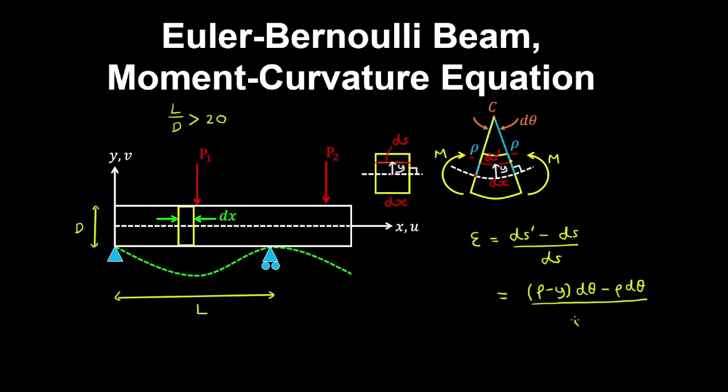So ρ dθ cancels with this one, and then the dθs cancel, so we end up with the strain being minus y over the radius of curvature, where y is the distance of the fiber from the neutral axis.